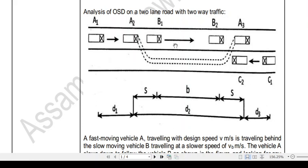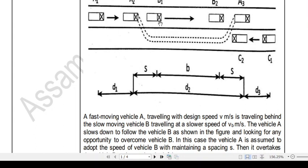If there is no oncoming vehicle, vehicle A gets the chance to overtake. During the following phase, vehicle A maintains a safe distance from vehicle B. When the opportunity arises, vehicle A moves to the other lane, overtakes vehicle B, and then returns to its original lane at position A3. The total overtaking operation can be divided into: D1 — the distance during which vehicle A follows vehicle B; D2 — the actual overtaking maneuver; and D3 — the distance covered by the oncoming vehicle C moving from position C1 to C2 during that time.